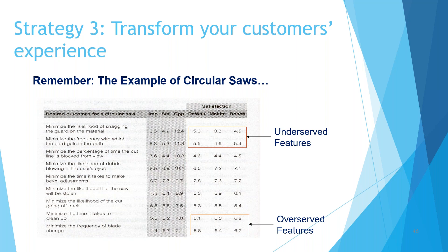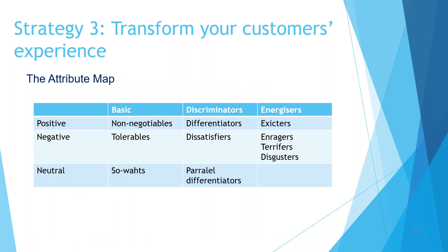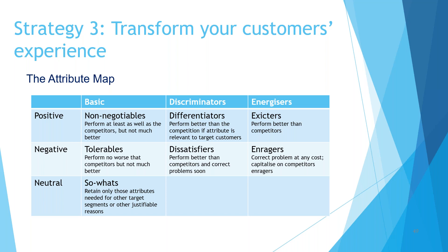In this case, we've got a whole stack of features that are underserved — important but not being well satisfied — and on the flip side, a whole stack of things that are being over-served and could be removed from the product without impacting customer satisfaction. The tool for this is the attribute map, which describes your offering in terms of what it does to please or displease customer segments.